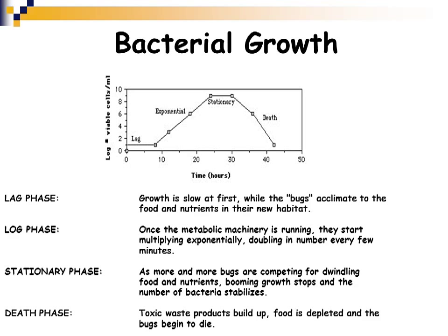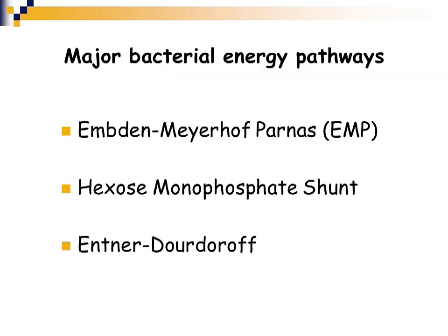We're now going to talk about metabolism. There are several pathways that bacteria utilize to gain energy, covered in a general microbiology course. We won't go into great detail here, but the main pathways are the Emden-Meyerhof-Parnas (EMP), Hexose Monophosphate Shunt, or the Entner-Doudoroff pathway.